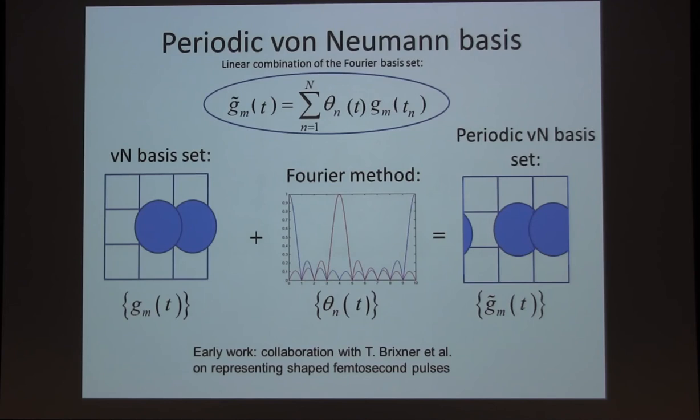Our work in this started with Tobias Brixner in a completely different context. It was on representing shaped femtosecond pulses using a time-frequency representation. When we did that, what we discovered is that we got terrible convergence with these Gaussians in phase space, just the way Davis and Heller got terrible convergence. But we found that if you make the Gaussian basis set periodic, both in time and in frequency, or in the case of quantum mechanics position and momentum, then the basis set converges exactly the same way that the Fourier basis converges.